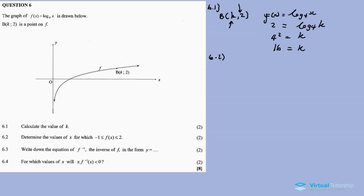6.2: Determine the values of x for which -1 ≤ f(x) ≤ 2. So therefore basically they want the x values where the function f(x) is between -1 and 2 along the y-axis.